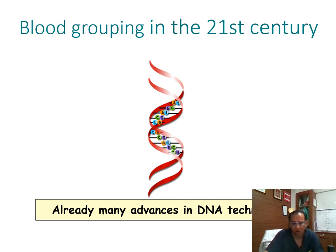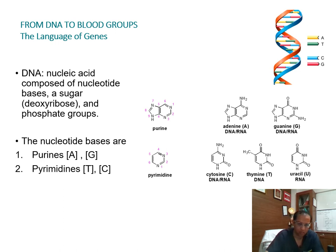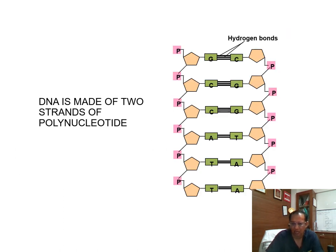Blood grouping in the 21st century involves DNA techniques. From DNA to blood group — this is the language of genes. This is the double helical structure of DNA described by Watson and Crick. You can see the ATGC nucleotide bases — purines are A and G, pyrimidines are T and C. DNA is a nucleic acid composed of nucleotide bases, a sugar, and a phosphate group. The rungs of this ladder are formed by the nucleotide bases; there are three hydrogen bonds between G and C and only two between A and T. DNA is made of two strands of polynucleotides running in anti-parallel direction.